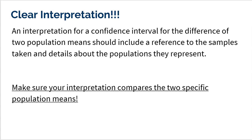Let's move on and talk about the interpretation. Step four is a step that a lot of students mess up — they do all this great work and then flounder through the interpretation. An interpretation for a confidence interval for the difference of two population means should include a reference to the samples taken and details about the populations they represent. You've got to say you're 95% confident based on the samples you looked at, because your interval is only based on your samples.